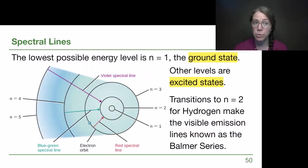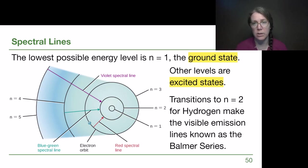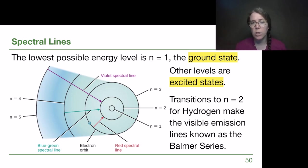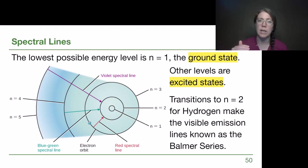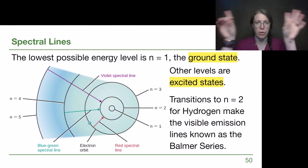The lowest possible energy level that an electron is allowed to be is n=1 — the closest it can get to the nucleus — and we call that the ground state. All the other levels are called excited states. The n=1, n=2, n=3 are the way we label the levels of our building — like first floor, second floor, third floor.